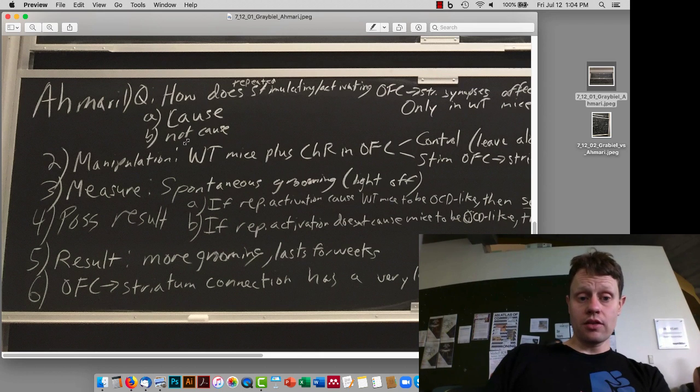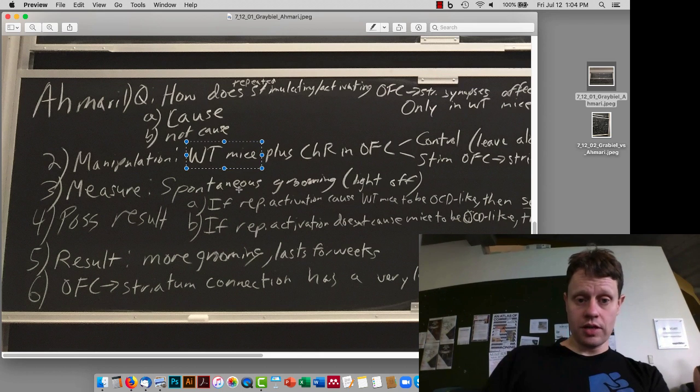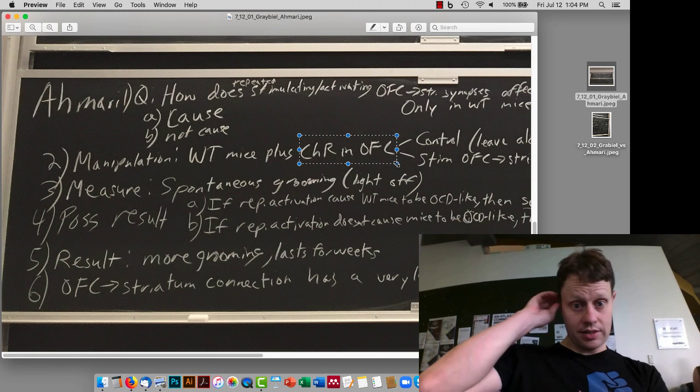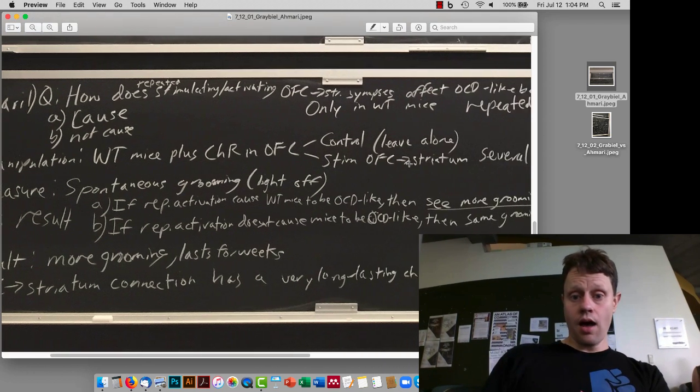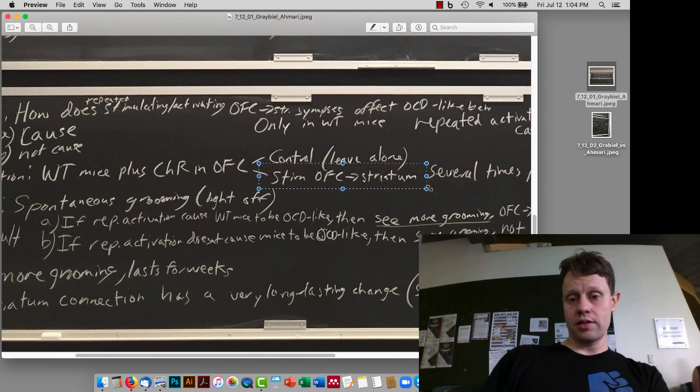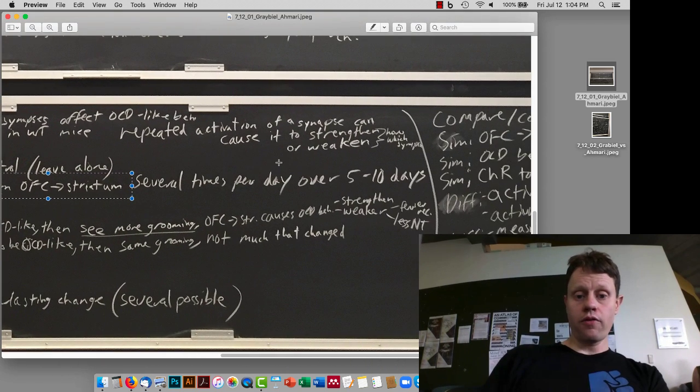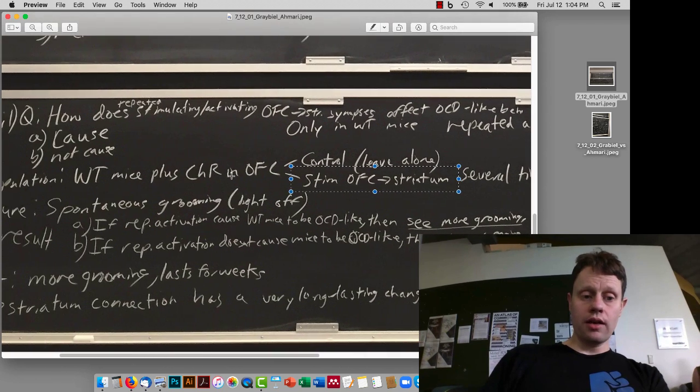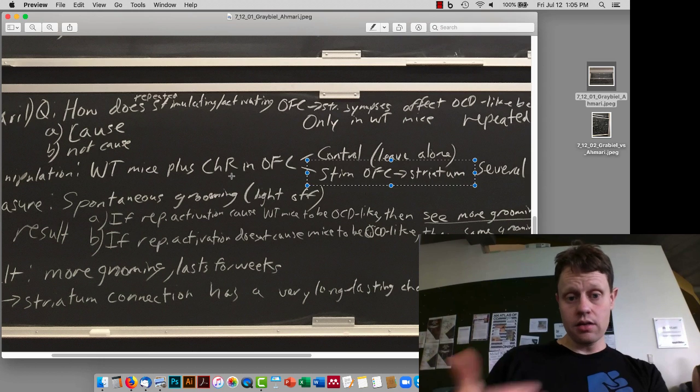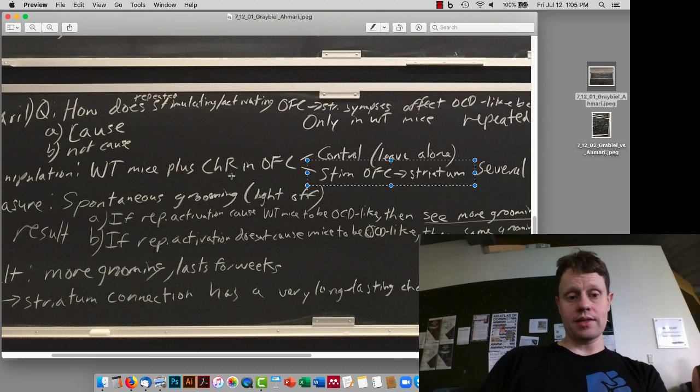In terms of the manipulation, again, they're starting with just wild-type mice, no mutations. They add channelrhodopsin in the orbital frontal cortex. That's the same as the Angrabial paper. And then they have two things. Either they have control mice, where they don't stimulate this, or they do stimulate the orbital frontal cortex inputs. In this case, several times a day, over a period of five to ten days. And then they're looking at spontaneous grooming when the light's off, either later that day, or the next day, or even a few weeks later.